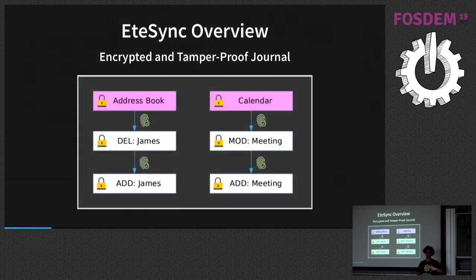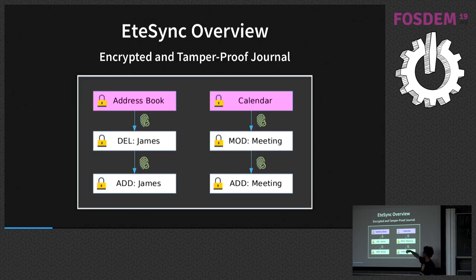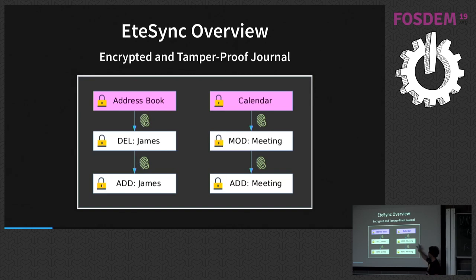The base part of EtterSync is an encrypted and tamper-proof journal. Every change in a collection — address book or calendar — is tracked: adding a contact, deleting a contact, adding a meeting, modifying a meeting. Think of it like a sort of encrypted and integrity-checked git. This is the base building block, and it prevents a lot of tampering — removing entries and reordering — and protects against all of that.